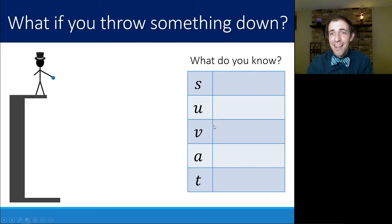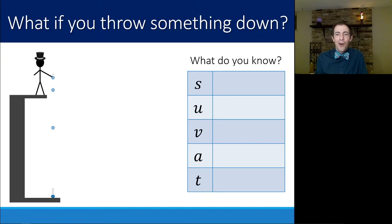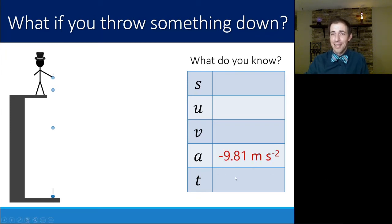The final scenario is if you just throw something down — you chuck it downward with some initial velocity. You don't necessarily know what that initial velocity is — you know it's some velocity that you gave it, but you don't have it for sure. So really, the only thing you know for sure if you throw something down is that its acceleration is negative 9.81 meters per second squared.